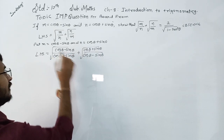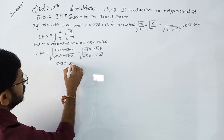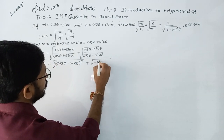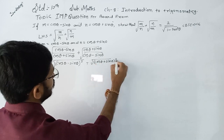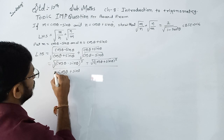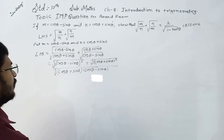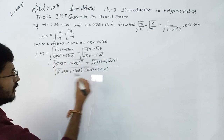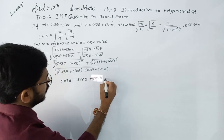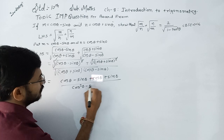After cross multiplication, the numerator becomes: (cos theta minus sin theta) plus (cos theta plus sin theta), and the denominator is the square root of (cos theta plus sin theta)(cos theta minus sin theta), which gives us cos square theta minus sin square theta.